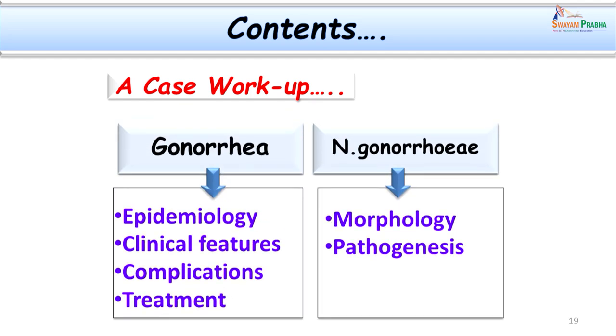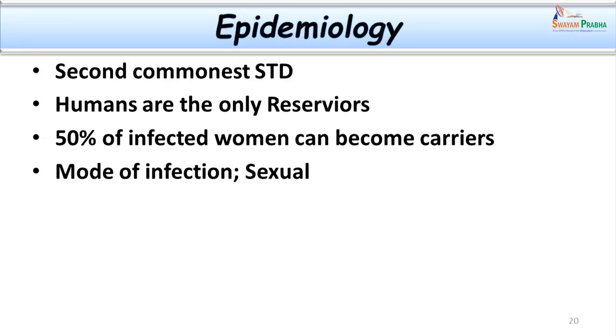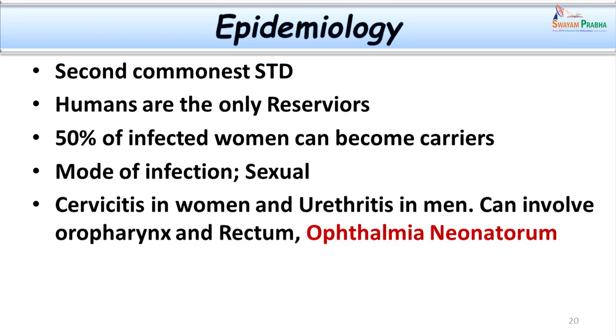Moving further, let us learn more about the disease and Neisseria gonorrhoeae. Coming to the epidemiology of gonorrhea, it is the second commonest sexually transmitted disease. Humans are the only reservoirs. Women and men can be equally affected; however, 50 percent of infected women turn into carriers. The mode of infection is through the sexual route. In women, cervicitis and urethritis are common, and in men more of the urethritis. However, the oropharynx as well as the rectum can be involved. Not only adults but also neonates can be affected with Neisseria. This happens when a child is born to an infected mother and the presentation will be within 1 to 2 days after birth — this condition is called ophthalmia neonatorum.